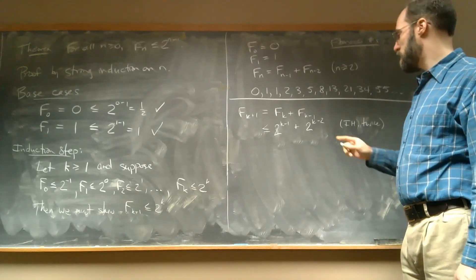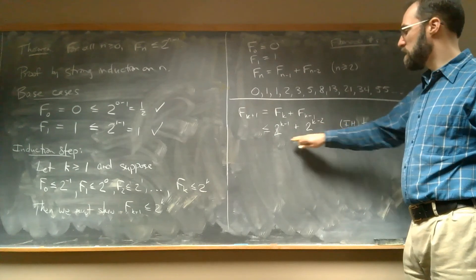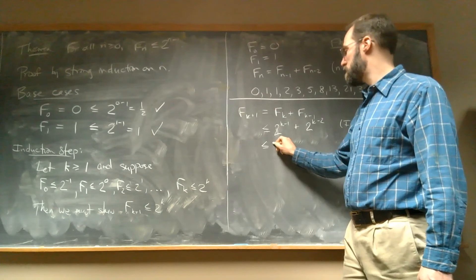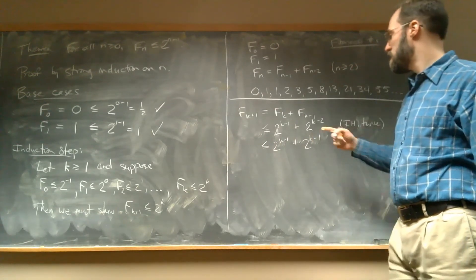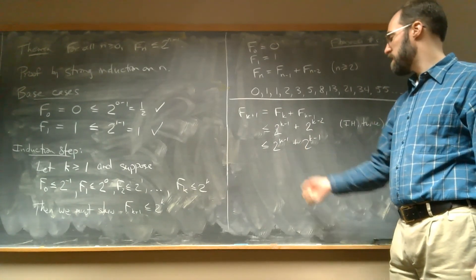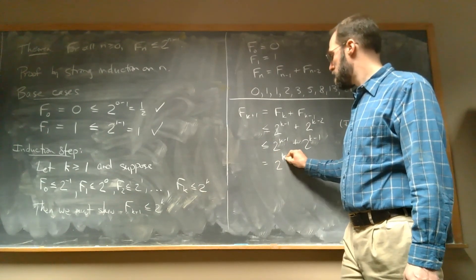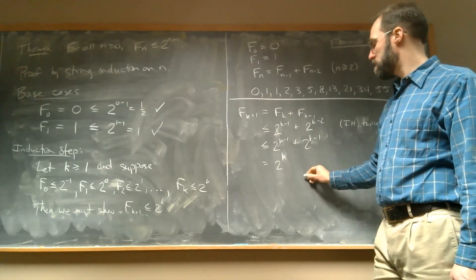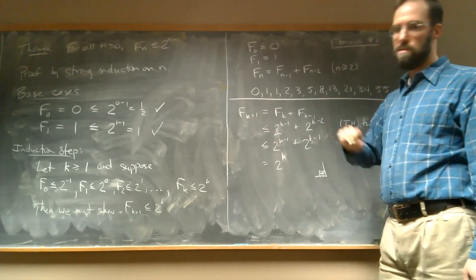Now it's just algebra. Since 2^(k−2) ≤ 2^(k−1), we get F(k+1) ≤ 2^(k−1) + 2^(k−1). Doubling 2^(k−1) gives 2^k. And that's exactly what we wanted to show: F(k+1) ≤ 2^k. The proof is complete.